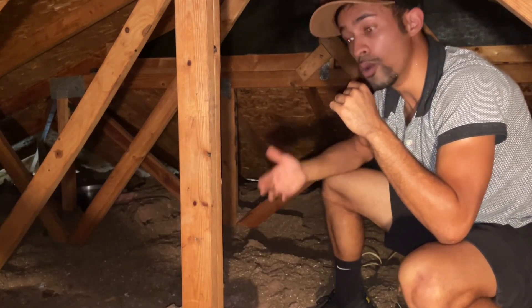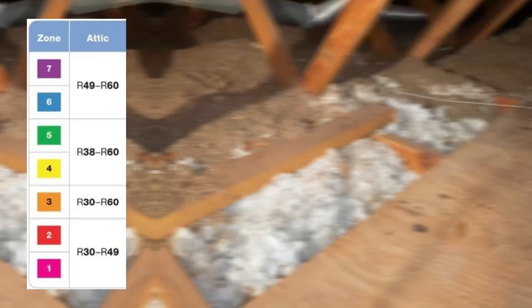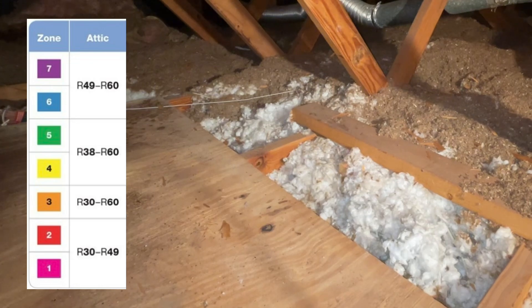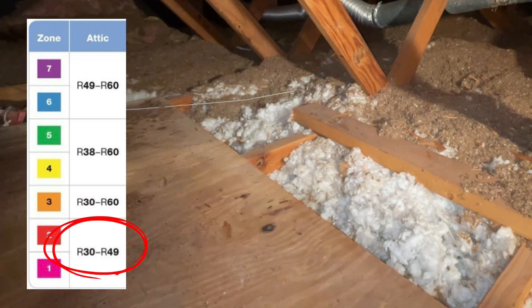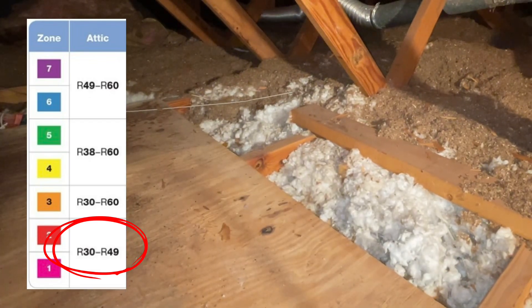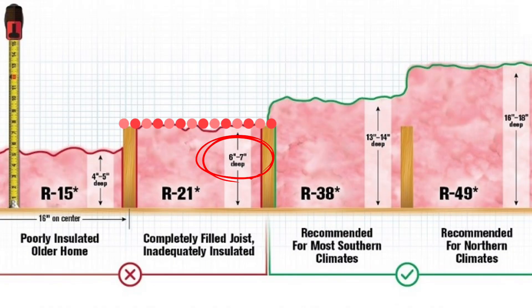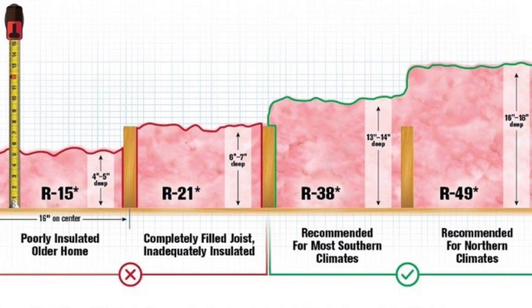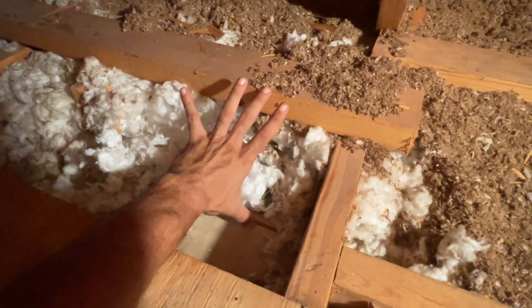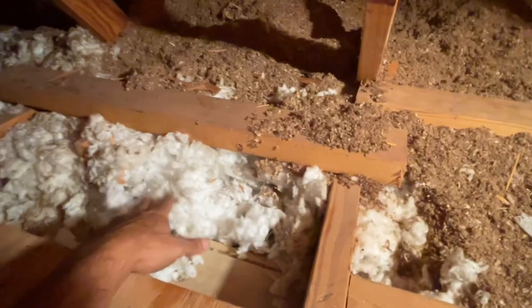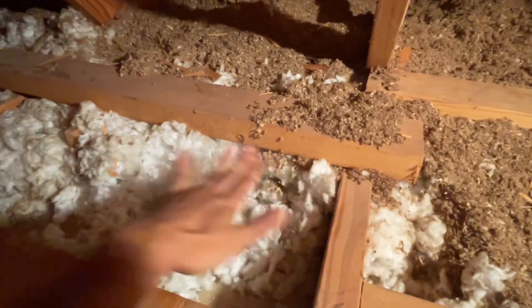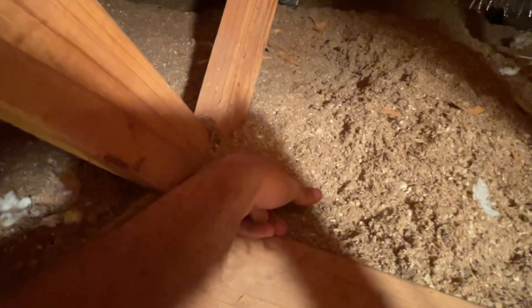How much insulation you exactly need is going to vary by state. I live in Florida, so my required R-value is around R38, which corresponds to about seven inches of thickness between your ceiling floor and the ceiling joist. The general rule of thumb is you want your insulation to cover your ceiling joist. You can see here that one panel is missing insulation, while in the corner of the other panel the insulation is fully covering the ceiling joist.